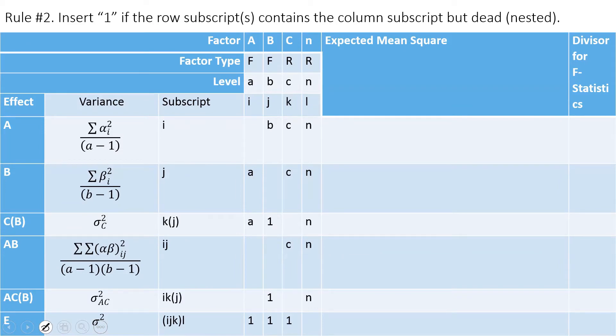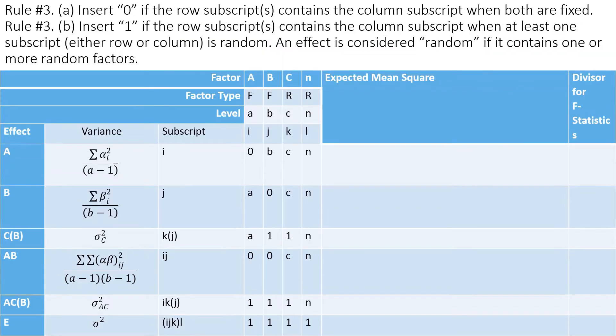The next rule is for the nested subscript. If the subscript is nested or dead, then we type one if it matches. For example, this J is nested or dead matches with J, so we type one here. J is nested in K, so we type one here. Similarly, I have I J K, so the L replication is nested in treatment combination I J K. If this row contains the column, it contains I, it contains J, it contains K, so we're going to do one one one there.